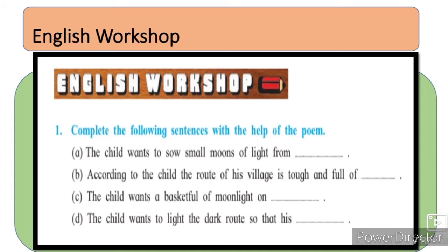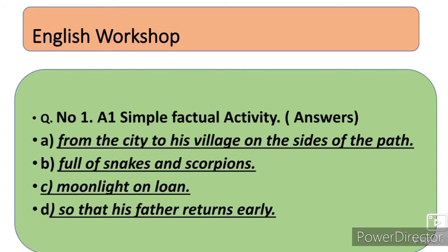دوسرا: 'According to the child, the route of his village is tough and full of' — بچے کے مطابق گاؤں سے شہر جانے والا راستہ بہت سخت ہے، full of — بھرا ہوا ہے۔ تیسرا: 'The child wants a basket full of moonlight on' — چوتھا: 'The child wants to light the dark route so that his' — اس کے جوابات یہ ہیں: (1) from the city to his village on the sides of the path، (2) full of snakes and scorpions، (3) moonlight on loan، (4) so that his father returns early — تاکہ اس کے والد جلدی واپس آ جائیں۔